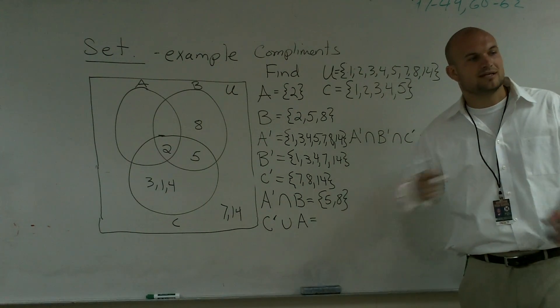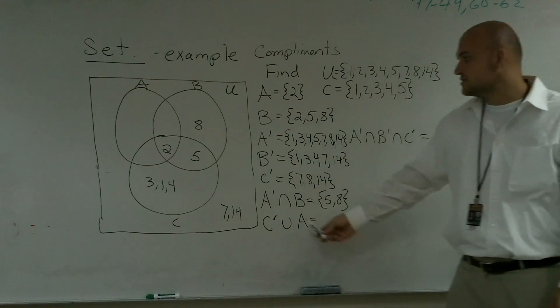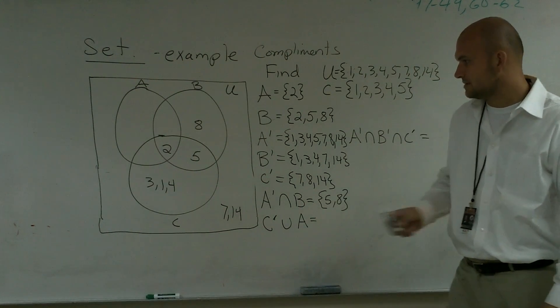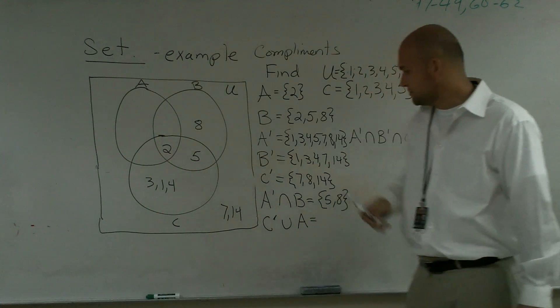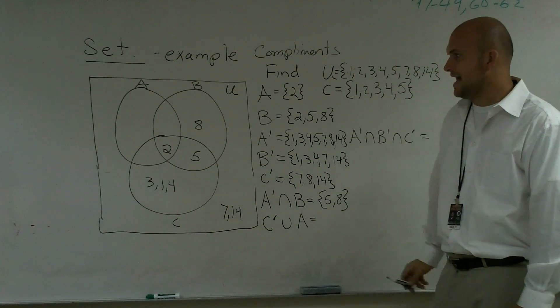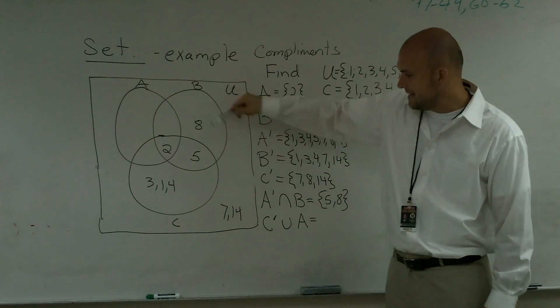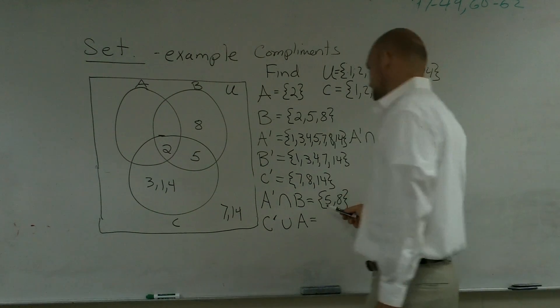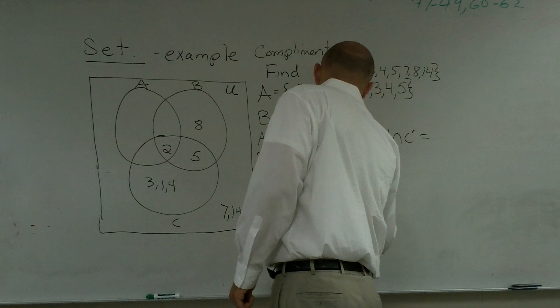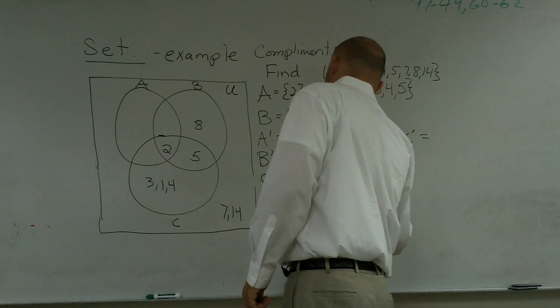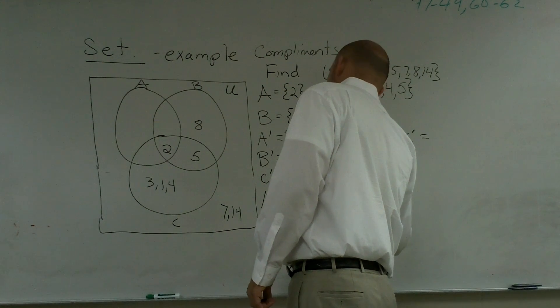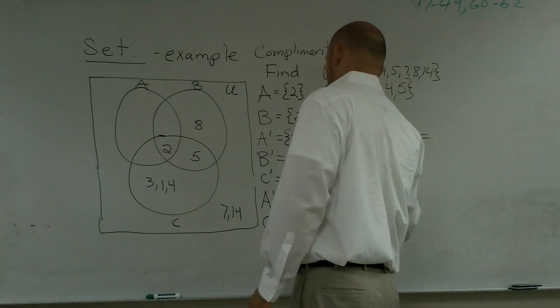A union, though, remember, is addition. You're going to be adding them up. So everything that's not in C, which is 8, 7, and 14, plus everything that's in A, which is just 2. So really, I can just go 8, 7, 14, plus everything that's in A, which is 2. So that's 2, 7, 8, 14.